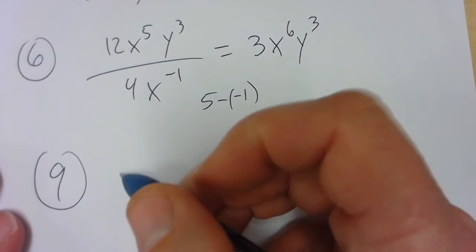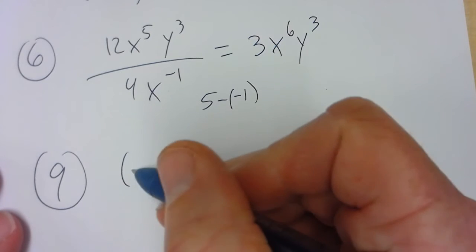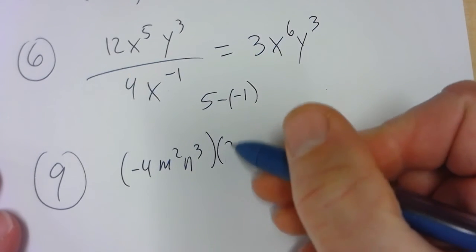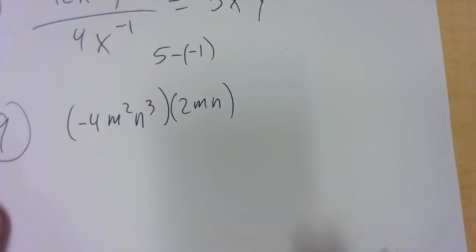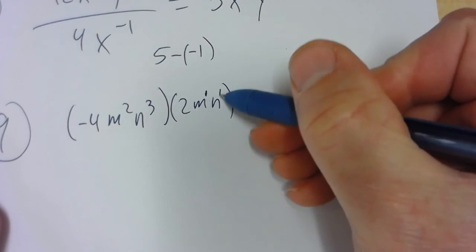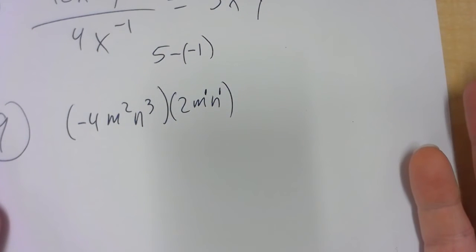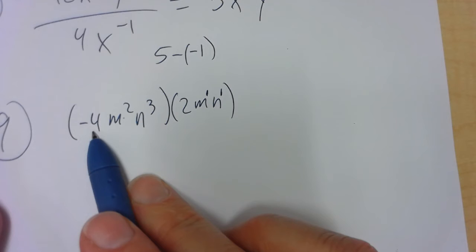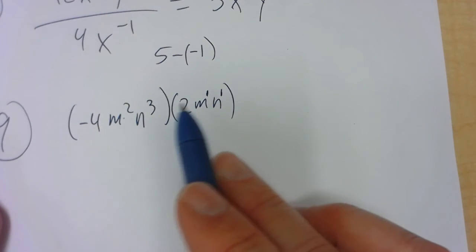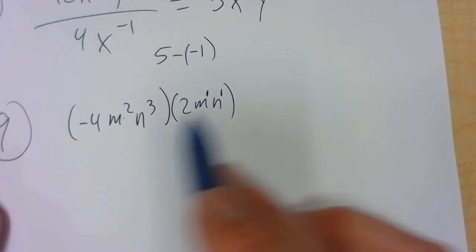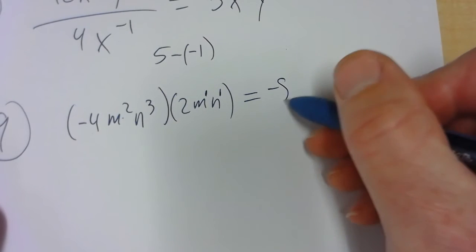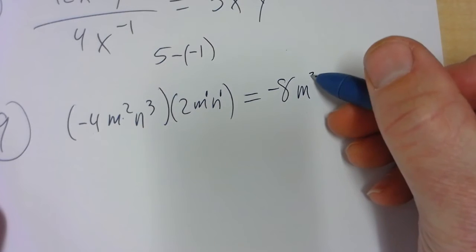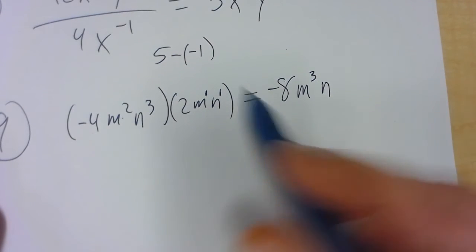Number 9: it's negative 4 m squared n cubed times 2mn. The m and n are to the 1st power — there are 1s on each. When you multiply like bases, you add the exponents. But with regular numbers, you do regular things: negative 4 times 2 is negative 8. m to the 2nd times m to the 1st is m to the 3rd. And then n to the 4th.